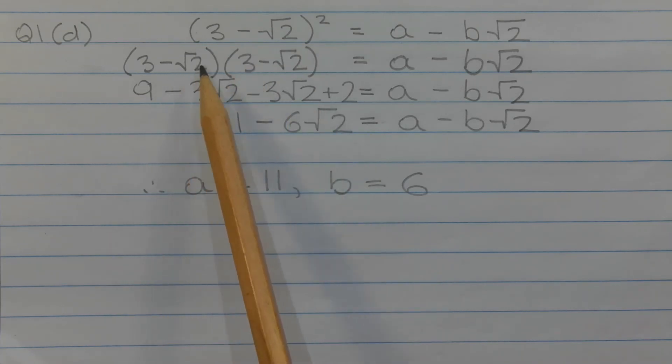And negative root 2 times negative root 2 gives us positive 2. So notice that 9 and 2 are our rational terms, and these two terms here, which contain the root 2 term, are our irrational terms.